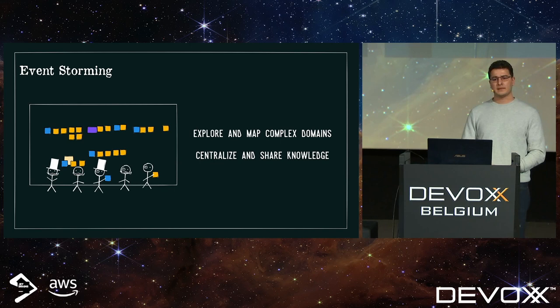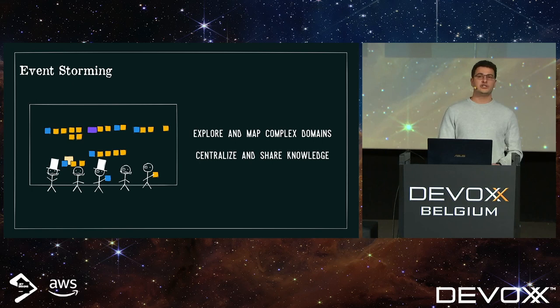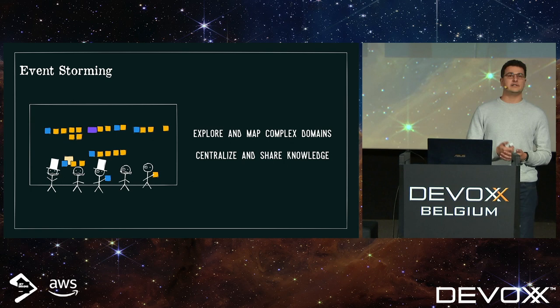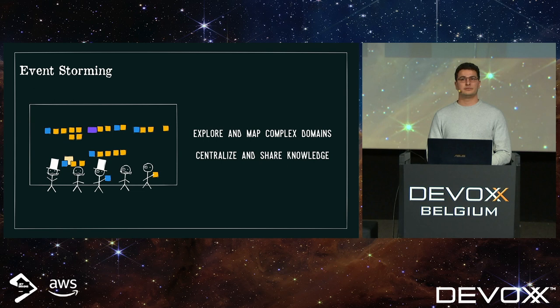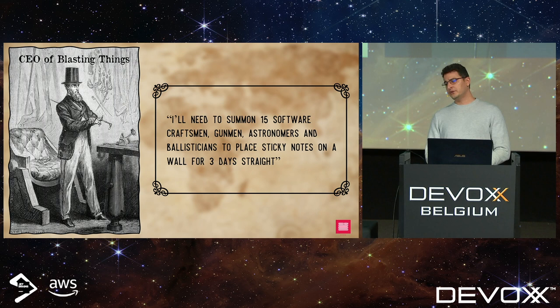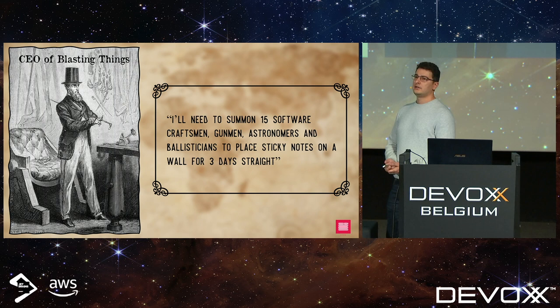We want to avoid fragmented knowledge, so we centralize and share it through event storming. It's called event storming because we start from the events up — not about properties or topology. Domain driven design is about process and behavior, and events are a great symptom of that behavior. So we go to the president of the gun club and tell him we need to summon 15 software craftsmen, gunners, astronomers and ballisticians to put sticky notes on a wall for three days straight.